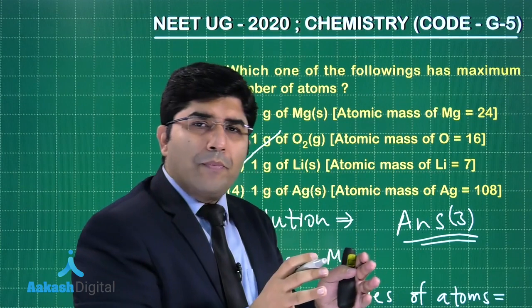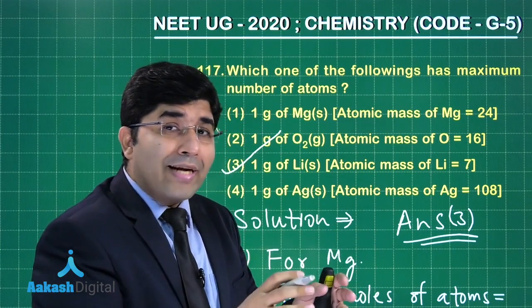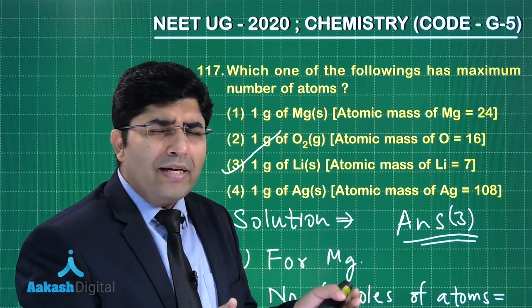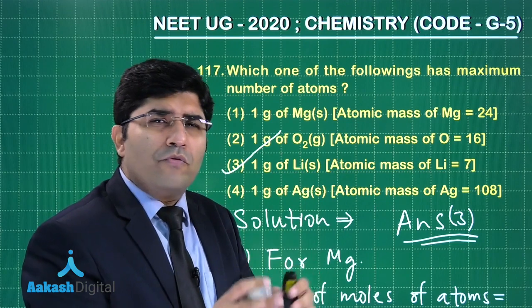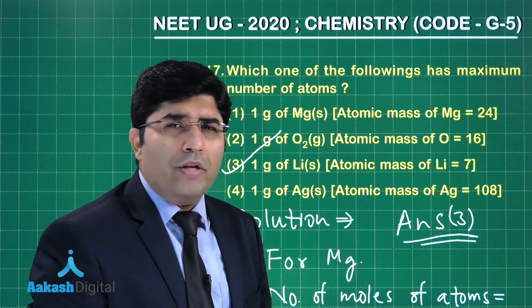We could multiply with the Avogadro number to find out the number of atoms of these elements, but if we know that higher is the number of moles of the atoms, higher will be the number of atoms. Let's move on to the next question.